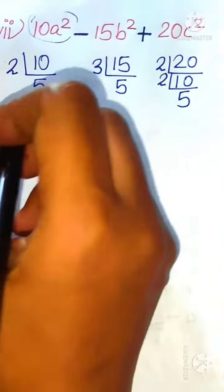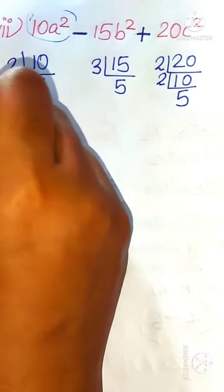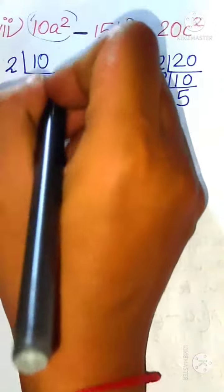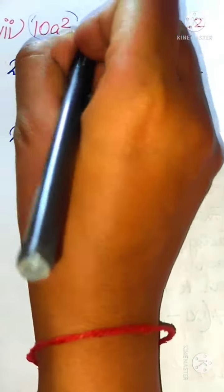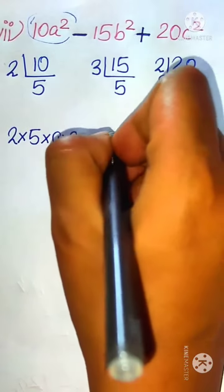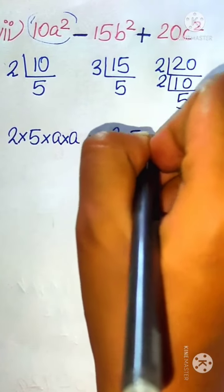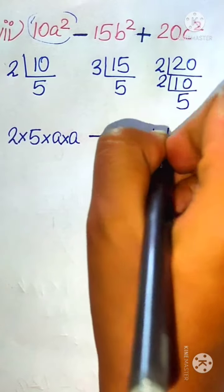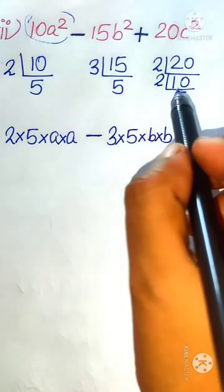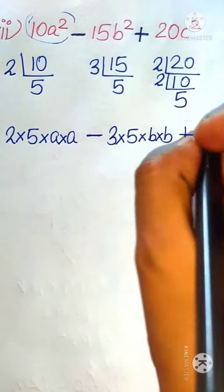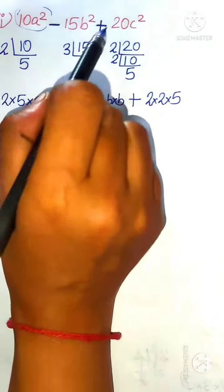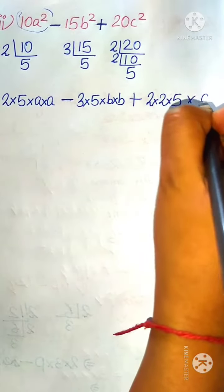So for 10a square, 10 can be written as 2 into 5, and a square means a into a. Next we have separator minus. For 15b square, 15 can be written as 3 into 5, and b square means b into b. Then separator plus. For 20c square, 20 can be written as 2 into 2 into 5, and c square means c into c.